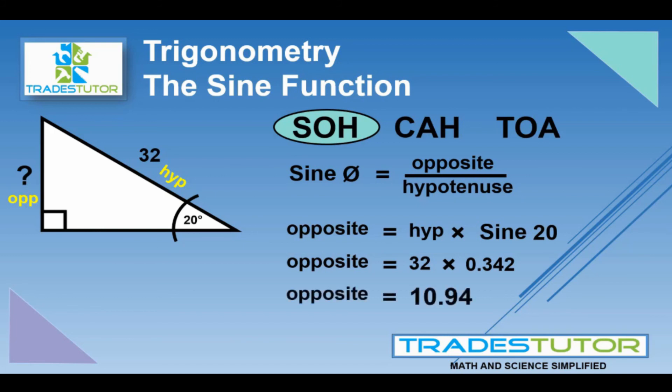Which, once again, makes sense. The hypotenuse is going to be bigger than the opposite. In this case, it's a lot bigger. Three times the size. And that all works out. That all makes sense.